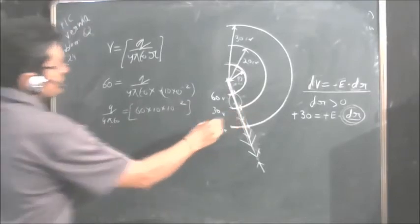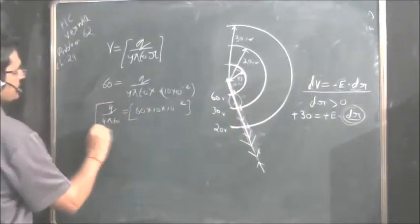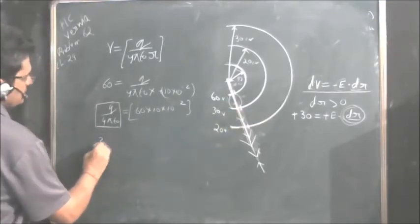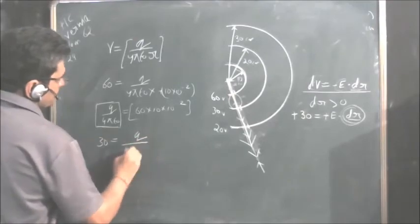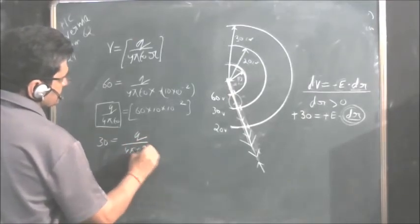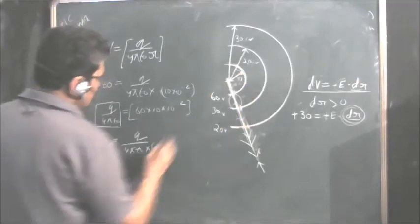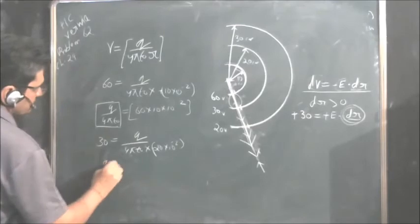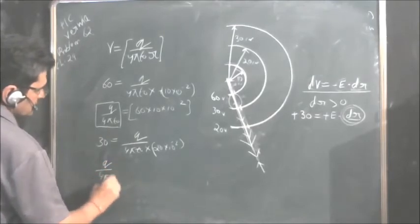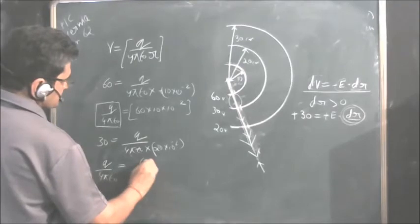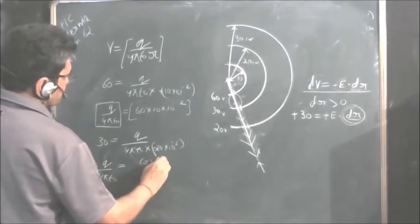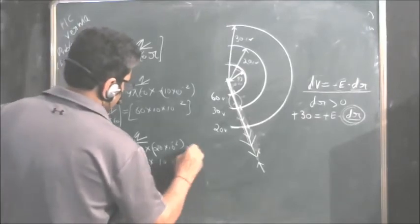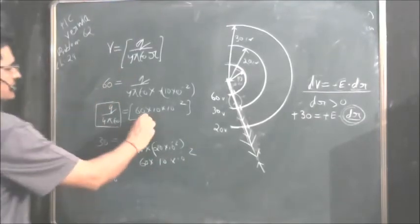We could have used this also. Let us use this, we should get the same value. Take this also, 30 equals Q upon 4πε₀ into 20 into 10 to the power minus 2. So Q upon 4πε₀ is again coming as 60 into 10 into 10 to the power minus 2. The value is coming as same.